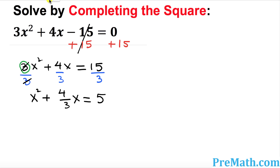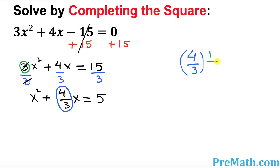Now look at the coefficient for x only — just disregard the sign — which is 4 over 3. Take the half of this number by multiplying by 1 over 2. That gives you 4 times 1 is 4 on top, and 3 times 2 is 6 on the bottom. Reducing that fraction gives you 2 over 3.